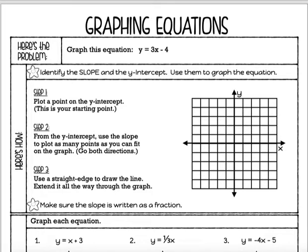We're going to graph the equation y equals 3x minus 4. Now what we're actually doing today is going backwards. We've had graphs with lines on them where we had to pick out the slope and the y-intercept and then write the equation. Today we're starting with the equation and going backwards to draw the line. We know how to do all of this.